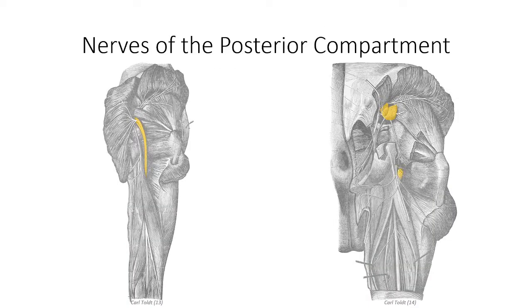Innervation to the posterior compartment is from the sciatic nerve. As previously stated, the sciatic nerve is actually a combination of two different nerve segments. The tibial portion innervates the hamstring muscle group, while the common fibular portion innervates the short head of the biceps femoris exclusively.